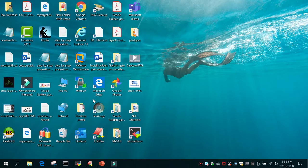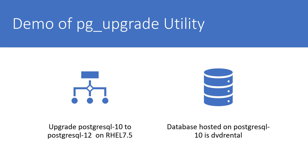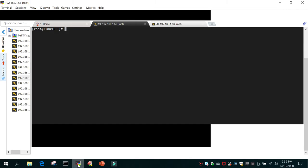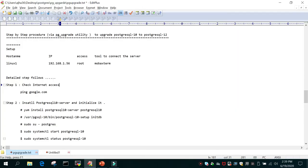So let's see the demo now. The demo we are going to perform is upgrading PostgreSQL 10 to PostgreSQL 12 on RHEL 7.5. We will be upgrading one database which is dvd_rental, though the upgrade applies to all databases hosted on the older cluster. I have listed all the steps in a notepad — this is a step-by-step procedure to upgrade PostgreSQL 10 to PostgreSQL 12.